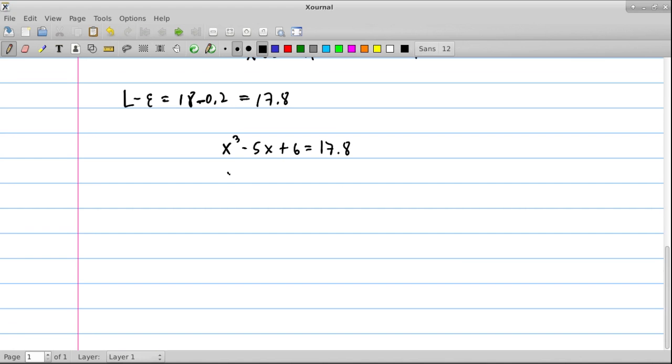So our equation this time would become x cubed minus 5x plus 6 equals 17.8. And again, moving it over, we get x cubed minus 5x minus 11.8 equals 0. And we're going to go back to Wolfram Alpha.